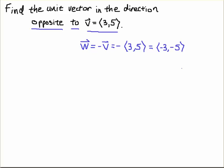However, we're not done with the problem because we want to compute a unit vector and unit vectors have length one. So what I'm going to do is go back to the vector v, find the unit vector in the direction of v which will have length one, and then I will change that vector's direction.